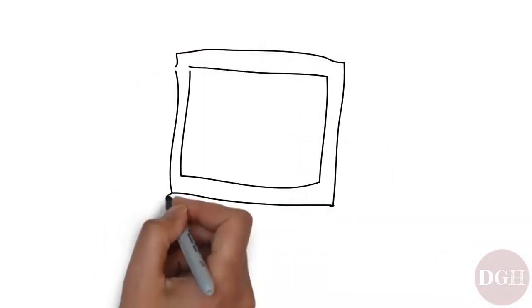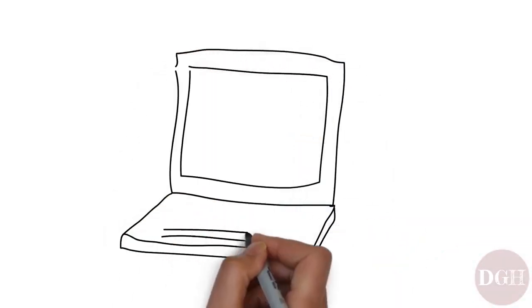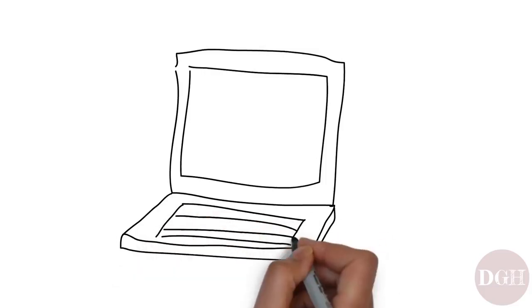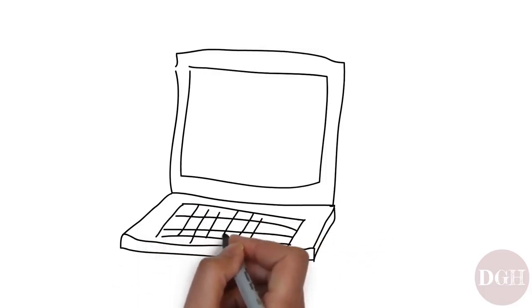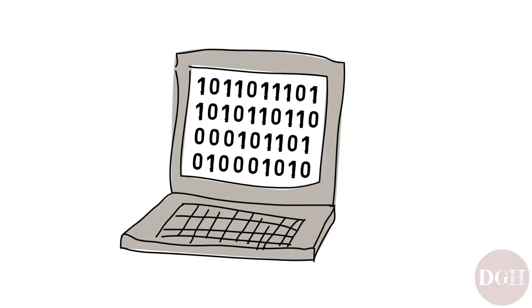Let's continue learning about how computers store data. As we learned earlier, computers use the binary system, which has only two numbers: 1 and 0.